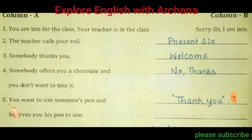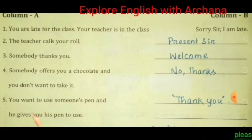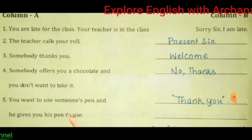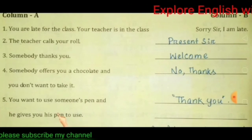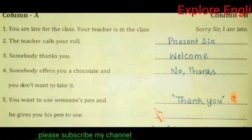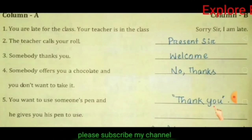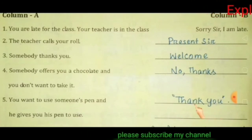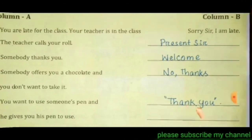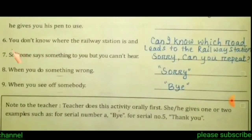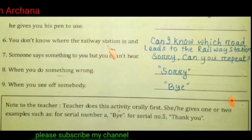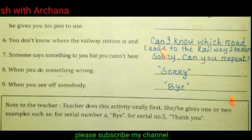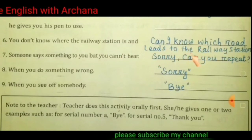Number 5: You want to use someone's pen and he gives you his pen to use. What do you say? Thank you. Number 6: You don't know where the railway station is. What do you ask? Can I know which road leads to the railway station?